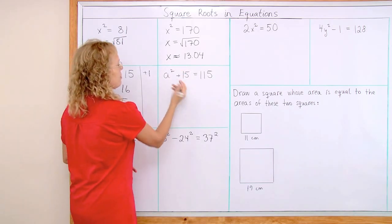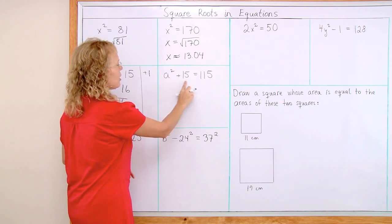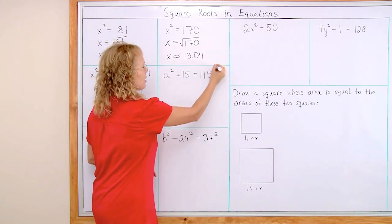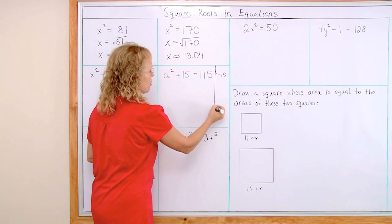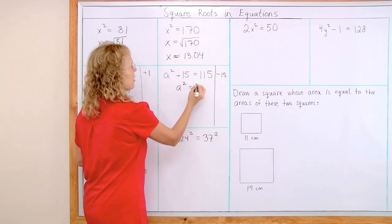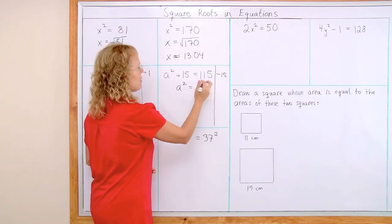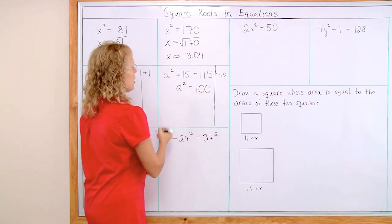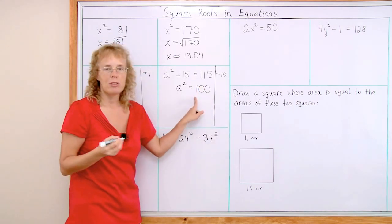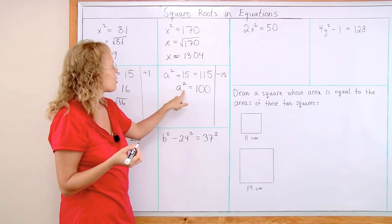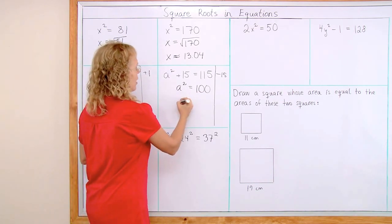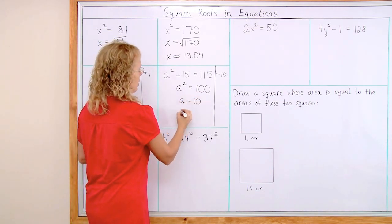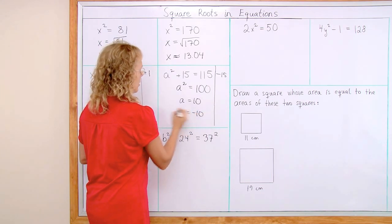Over here, again, we need to first do something to this plus 15. So I will subtract 15 from both sides. And then that leaves a squared here. And over here, subtract 15 so I get 100. And now, I take square root of 100. Or I think, what number squared is 100? So a equals 10. Or a equals negative 10.